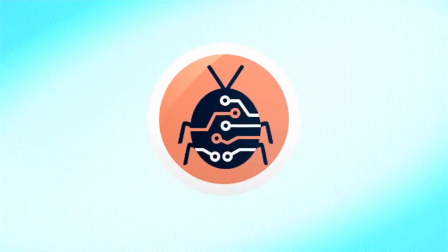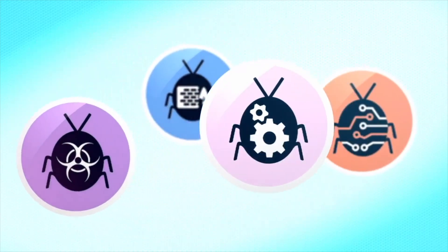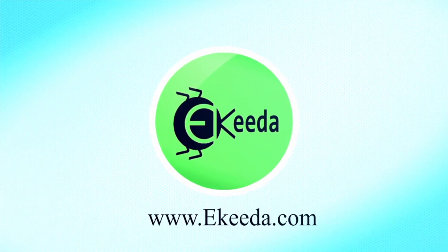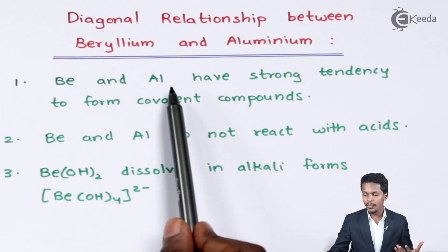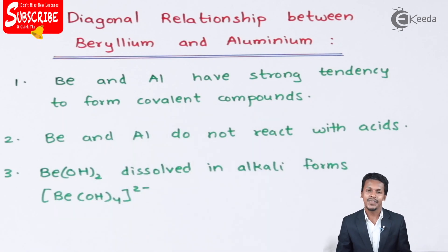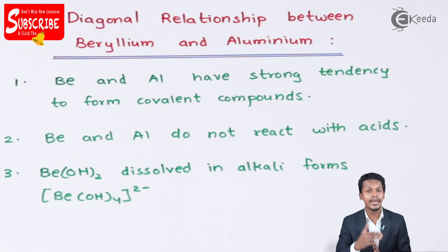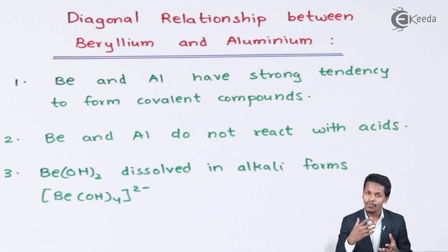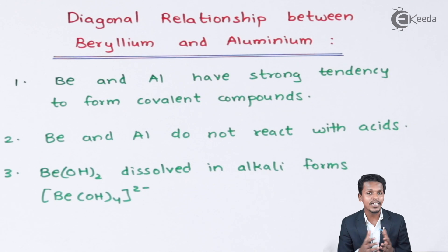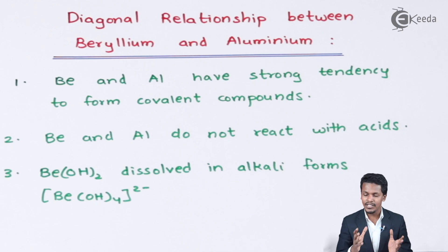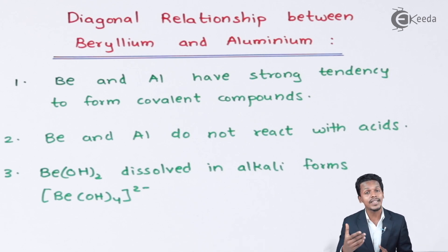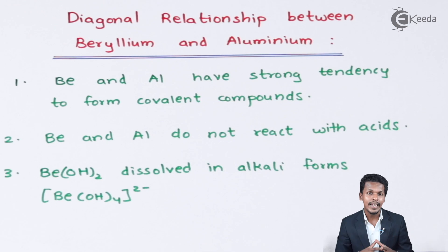The first point is that beryllium and aluminium have a strong tendency to form covalent compounds. Beryllium is less electropositive, and that is why it forms covalent bonds with other atoms or groups rather than ionic bonds. The rest of the group 2 elements, except beryllium, form ionic compounds. Meanwhile, aluminium also forms covalent bonds when combined with other elements — this is what makes beryllium and aluminium relatable to each other.